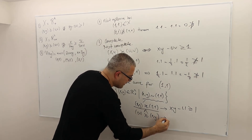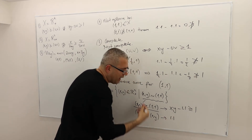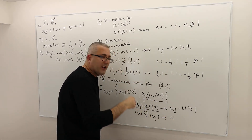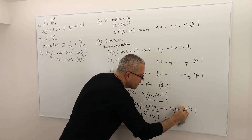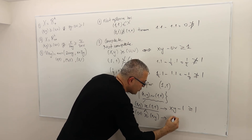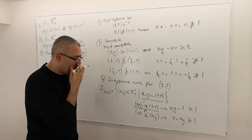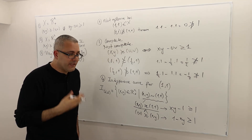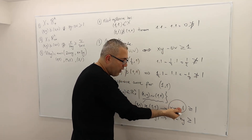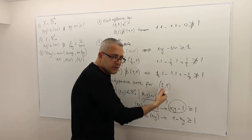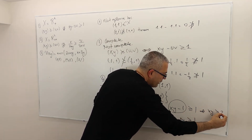And the second statement — 1 times 1 minus x times y is greater than or equal to 1, which means 1 minus x·y is greater than or equal to 1. I can send 1 to the other side without changing the inequality, so that means x times y is greater than or equal to 2. That means I need to find x's and y's where, when I multiply them, the result is greater than or equal to 2 — like (2,1), (1,2), etc.